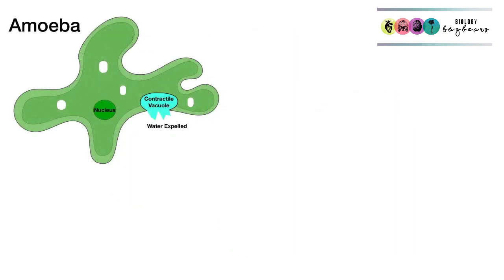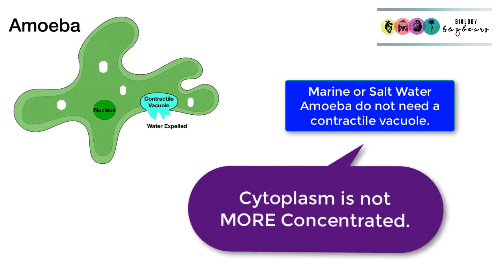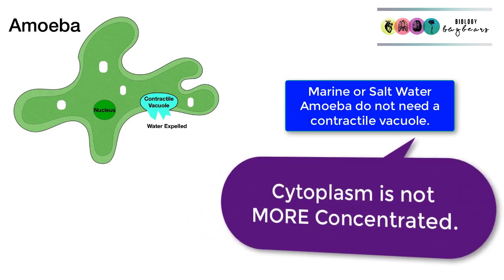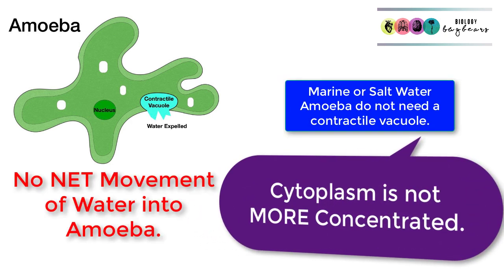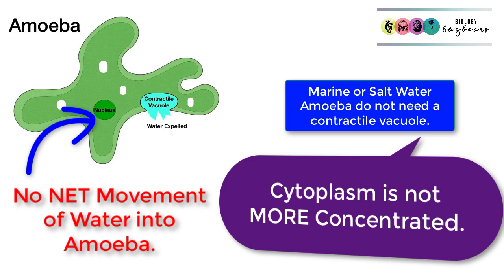Amoeba that live in saltwater conditions — marine amoeba — don't need a contractile vacuole. Why? Because their cytoplasm is not more concentrated than the water in which they live, and so there will not be a net movement of water from outside the amoeba to inside the amoeba.